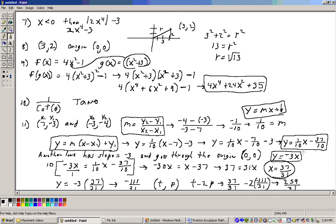And to find the point of intersection, I set these two equations equal to each other. I set the 1 tenths x minus 37 tenths equal to negative 3x. So, I have negative 3x equals 1 tenths x minus 37 tenths. To get rid of the fraction, I'll multiply by 10 to get rid of the common denominator of 10. Negative 3x times 10 is negative 30x. 10 times 1 tenths is 1x. 10 times minus 37 tenths is minus 37.